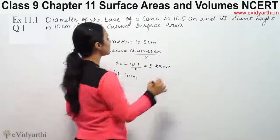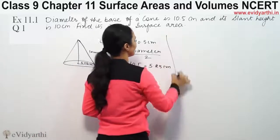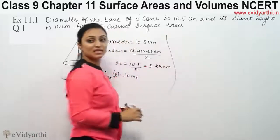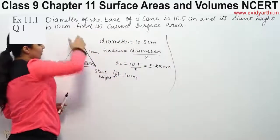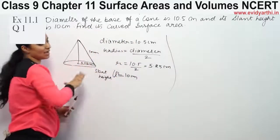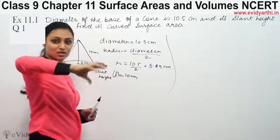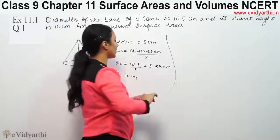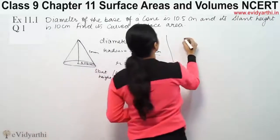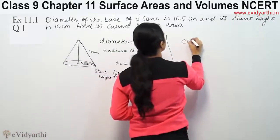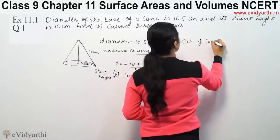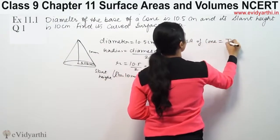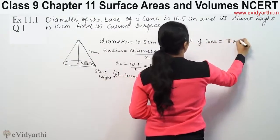Now we find the curved surface area. Curved surface area means just the upper lateral part of the cone — not the base. The formula for curved surface area of a cone is π times R times L.